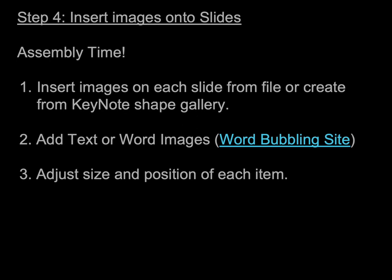Step 4: Insert images onto slides. Assembly time. Insert images on each slide from file or create from the Keynote shape gallery. Add text or word images — a link to the word bubbling site is in the description. Adjust size and position of each item.